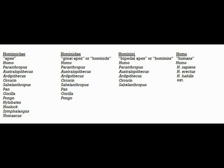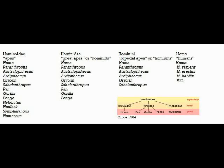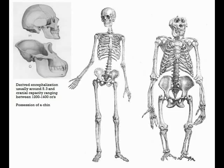Finally, the term hominid refers to great apes, while hominin refers exclusively to bipedal great apes like ourselves. The use of the term hominid to refer to extinct humans and australopith species is simply a holdover from the old method of classification.